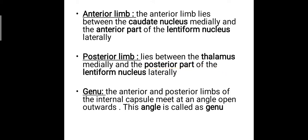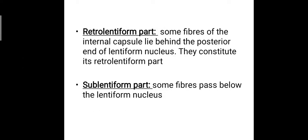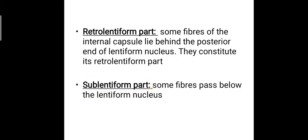The genu is the angle which joins the anterior and posterior limbs. The retrolentiform part lies behind the posterior end of the lentiform nucleus. Some fibers which pass below the lentiform nucleus constitute the sublentiform part — 'sub' meaning below. These are the parts of the internal capsule and where they are located.